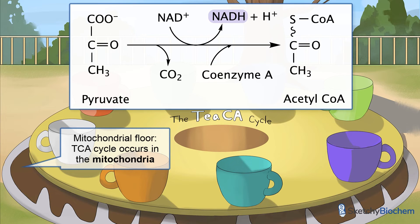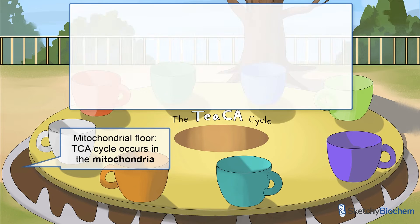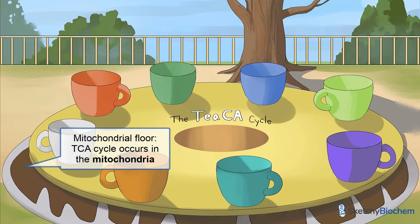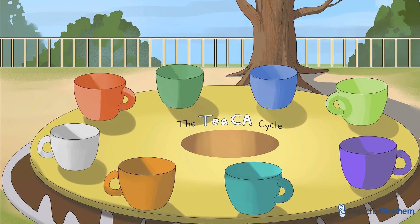When oxygen is available, pyruvate enters the mitochondrial matrix and is converted to acetyl-CoA via pyruvate dehydrogenase complex. This step produces an additional 2-NADH. Now we're left with two acetyl-CoA molecules, which will enter the TCA Cycle.